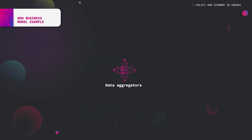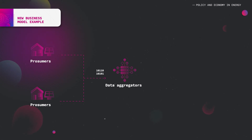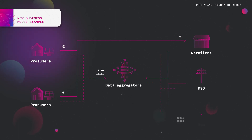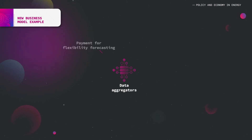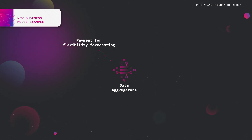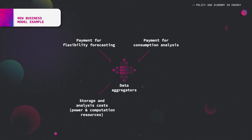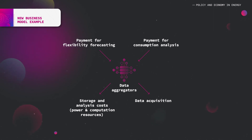Concerning the data-oriented PaaS strategy, data aggregators collect data independently or in collaboration with retailers, then sell their analysis and predictions to DSOs or TSOs, allowing them to optimize the grid and suggest offers adapted to consumption behaviors. Data aggregator sales correspond to data processing such as flexibility or load prediction for DSOs and TSOs, and consumption and behavioral analysis for retailers. Expenses relate to computational resources for data storage and processing, and data acquisition from consumers.